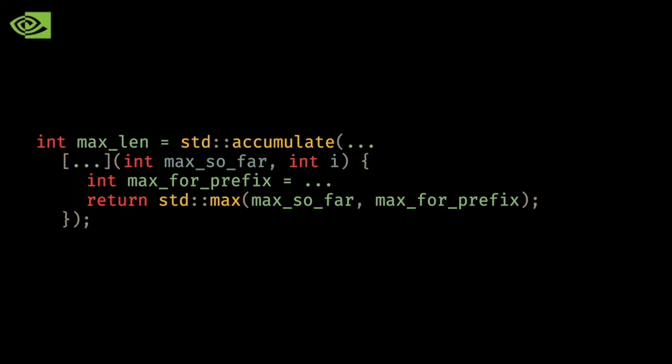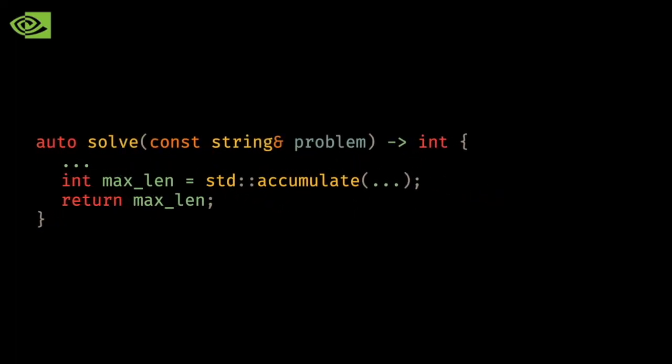I then return the maximum balanced substring for the current prefix, which is then folded in the outer std::accumulate to find the greatest balanced substring for all the prefixes of the original string. I then return the maximum length that I found and we have our answer.